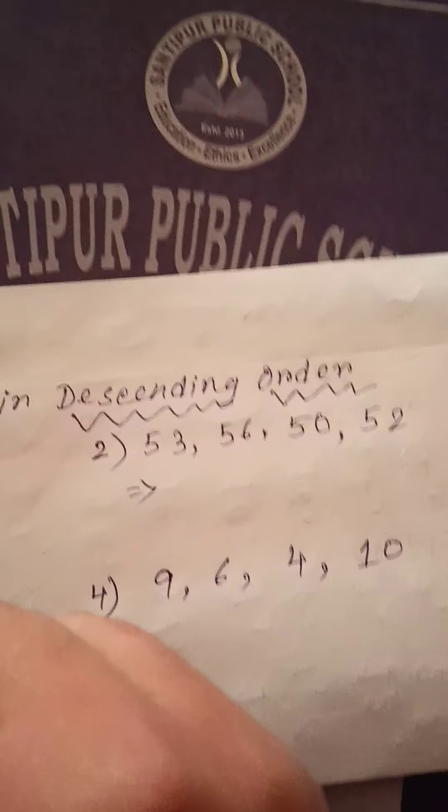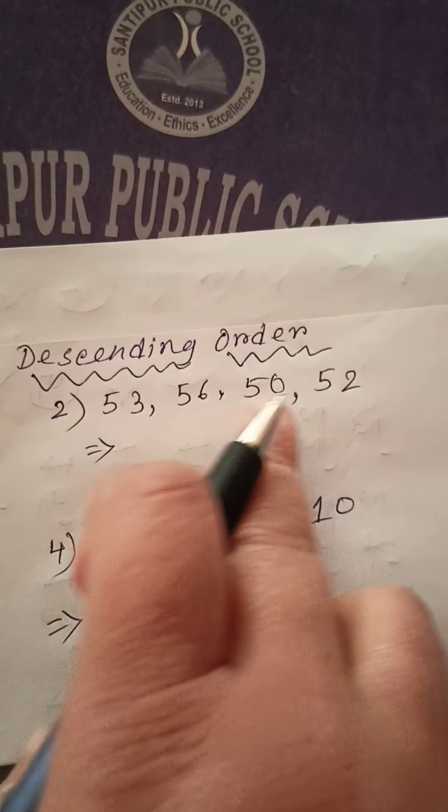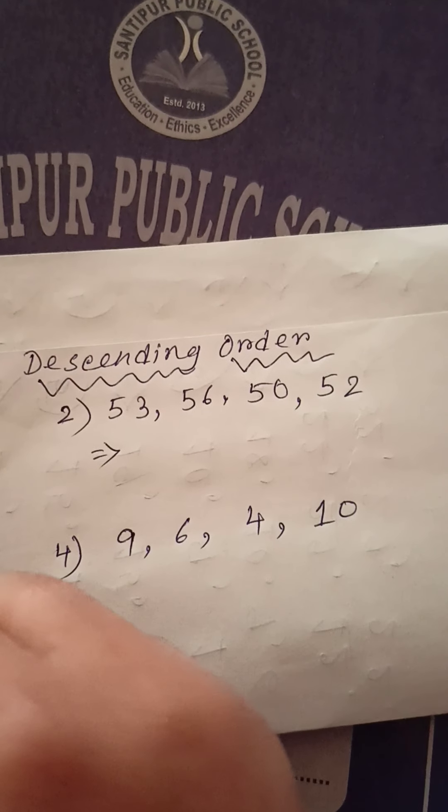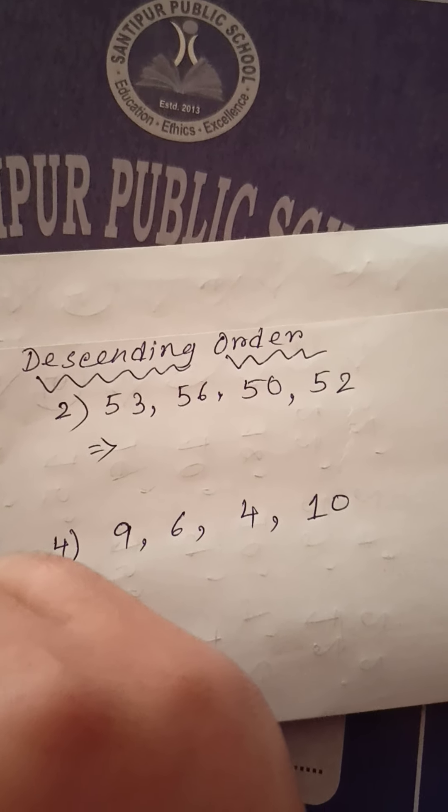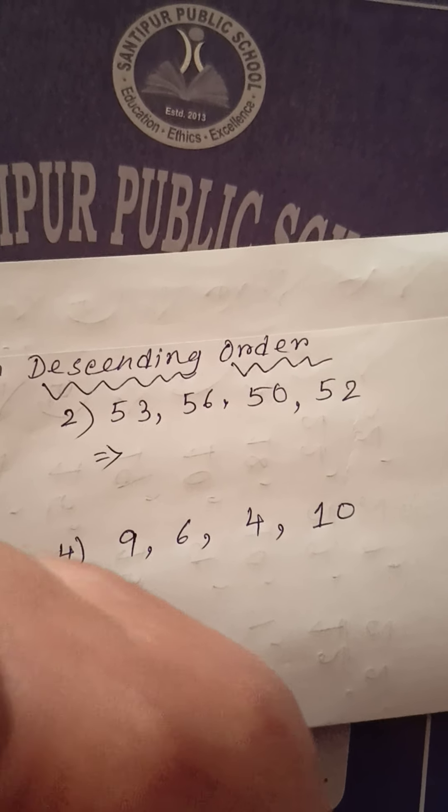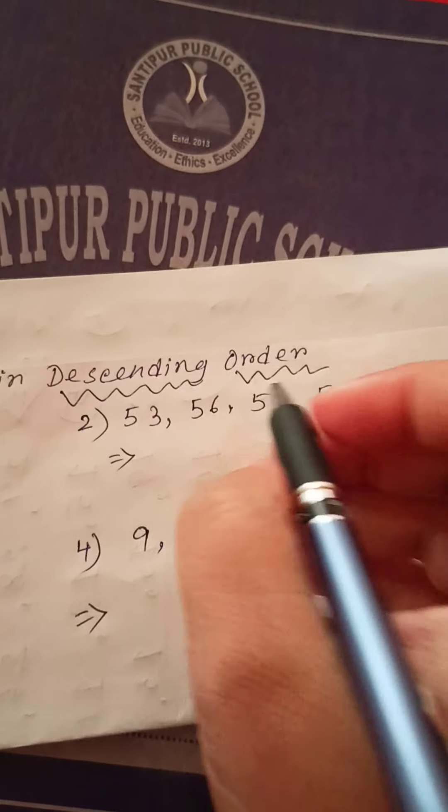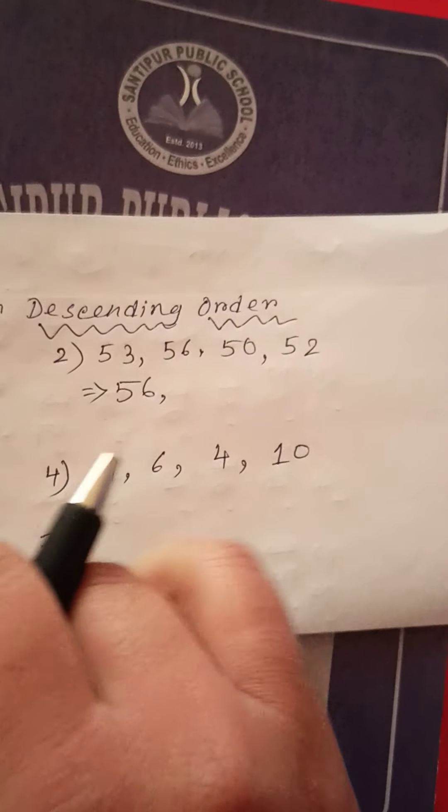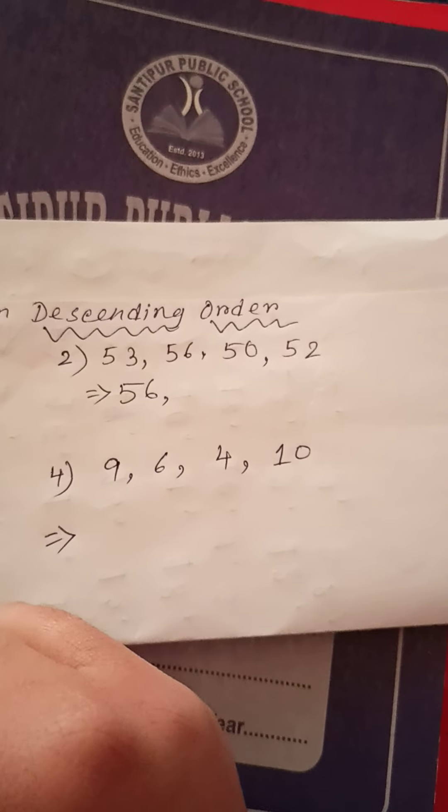Next. Look. Here is four number. 53, 56, 50, 52. So, which number is the biggest? So, will come the first biggest number. Yes. So, 56 is the biggest number.